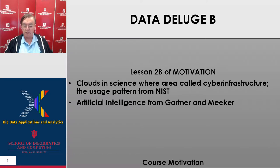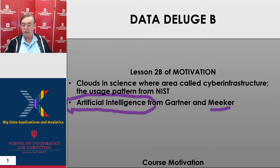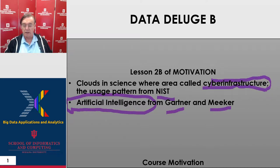It looks at the particular aspects of artificial intelligence and how they're application-related. That comes from recent analyses of internet trends from Mika and Gartner. Cyber infrastructure is our initial set of slides, and we will also use work that we did for NIST in this area. Let's get going on data deluge B.